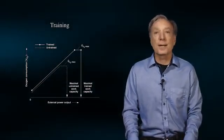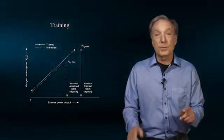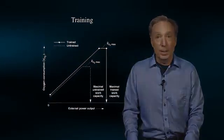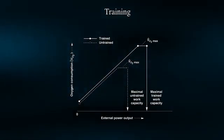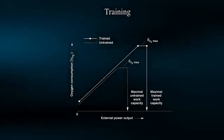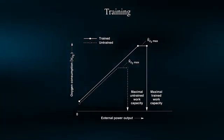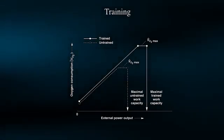A hallmark training adaptation associated with regular endurance training is an increase in one's V̇O2 max. The reason for this increase relate to improvements in oxygen delivery, thus cardiovascular adaptations, as well as improvements in muscle mitochondrial oxygen utilization. We will discuss these training adaptations more thoroughly in a later module.